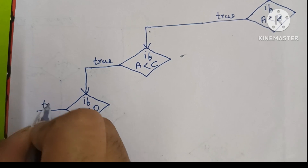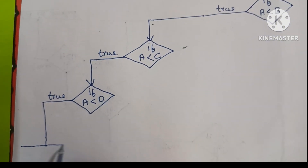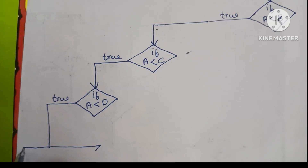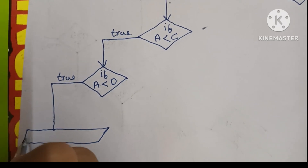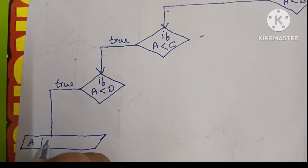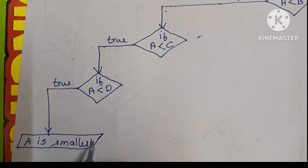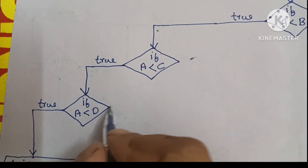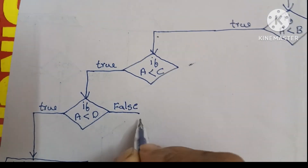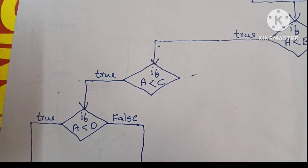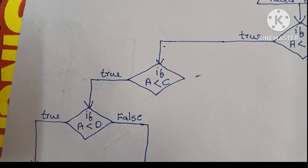If A less than D and this condition is true, then A is the smallest. We print A is smallest — the output value is written within a parallelogram shape. If the condition A less than D is false, we have to print D is smallest.